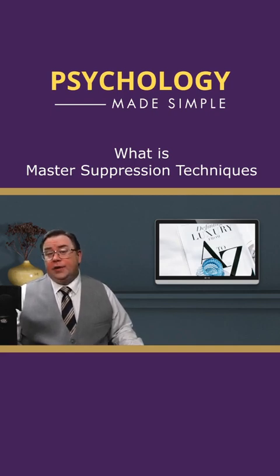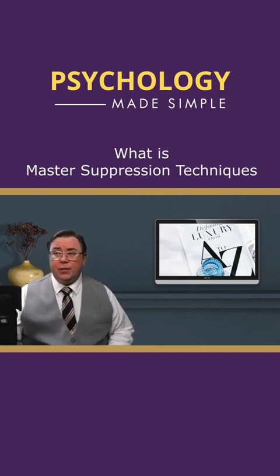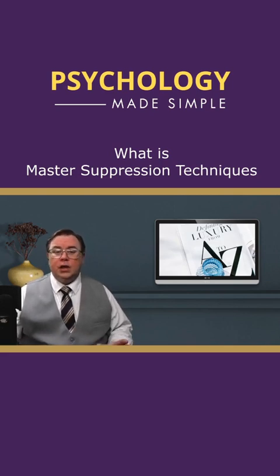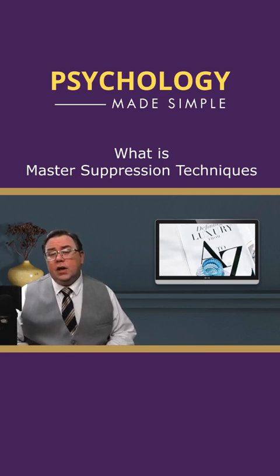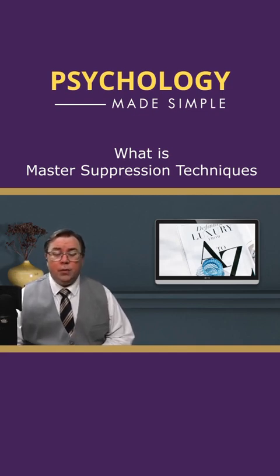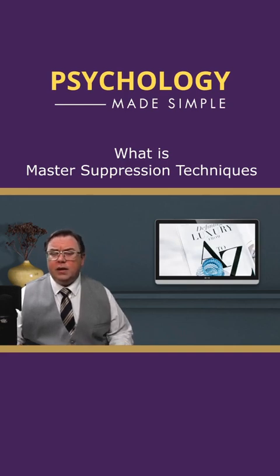Master suppression techniques are essentially strategies of social manipulation by which someone indirectly or subtly suppresses and humiliates their opponents. And as a psychological framework, it was first articulated by the Norwegian psychologist Inge Odd Nissen during the 1940s. Through master suppression techniques, a dominant person or group subtly oppresses others in order to maintain their dominant position within a social hierarchy.